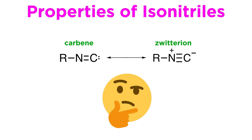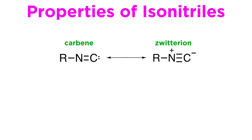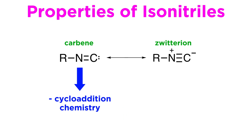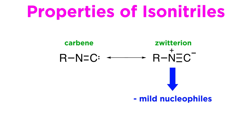This might be the second question: do isonitriles react as carbenes or as carbanions from the zwitterionic form? Well, the answer is both. Their carbene nature affords them many applications in cycloaddition chemistry, and they are important ligands in organometallic chemistry, like all other carbenes. Here, however, we will deal with their reactivity as mild nucleophiles.